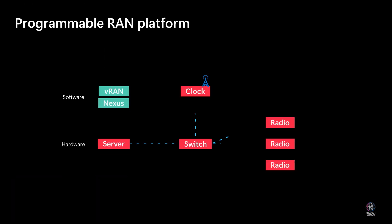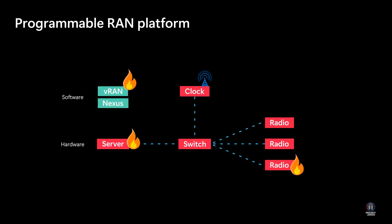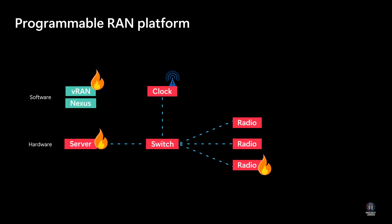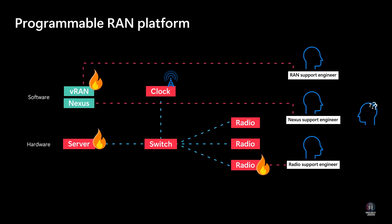In the intricate world of VRAN, anomalies are bound to happen. In this dance of network components, software, and hardware, frequent updates create a challenging landscape. Defining platform requirements is complex, and troubleshooting in the field comes with limited visibility. The operational puzzle: who answers the calls, and how do we detect problems across layers and vendors?